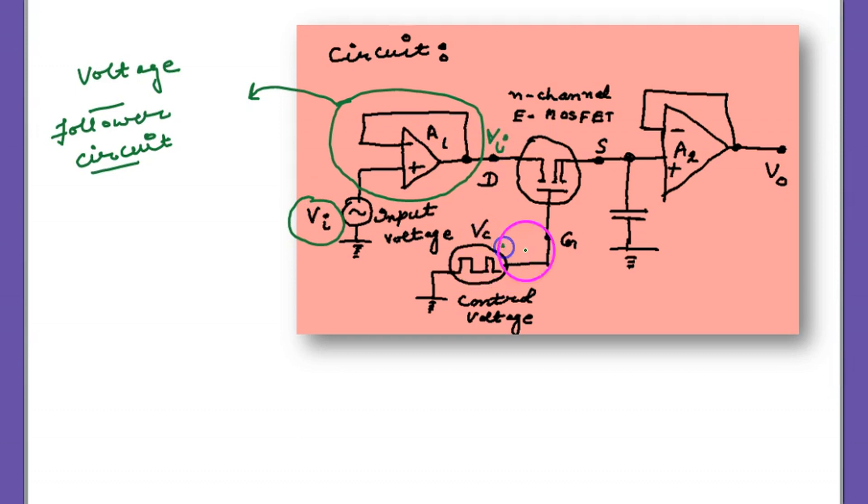So this is the drain, this is the control voltage applied to the gate. So this is the analog signal, the input signal which is coming. The op allows it to pass, and then the signal goes to the drain.